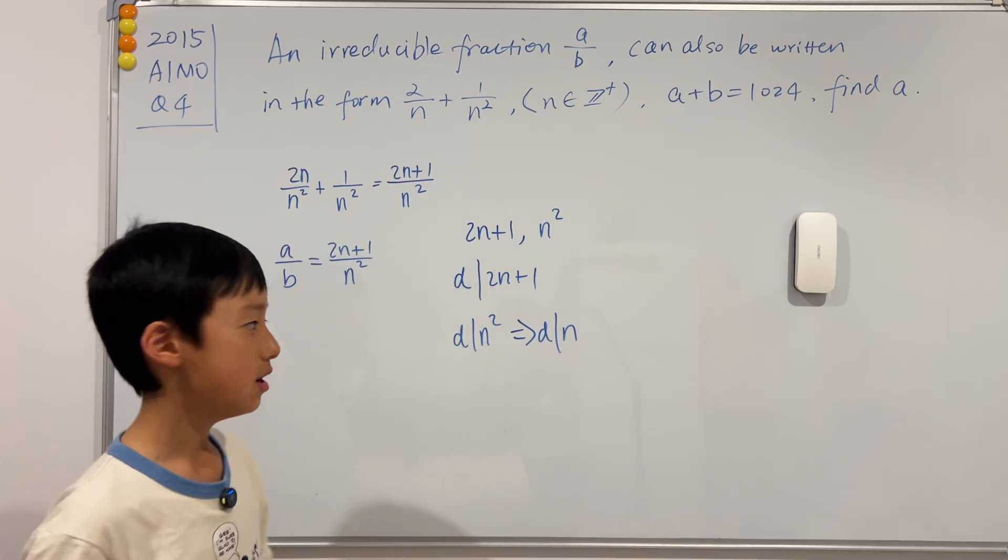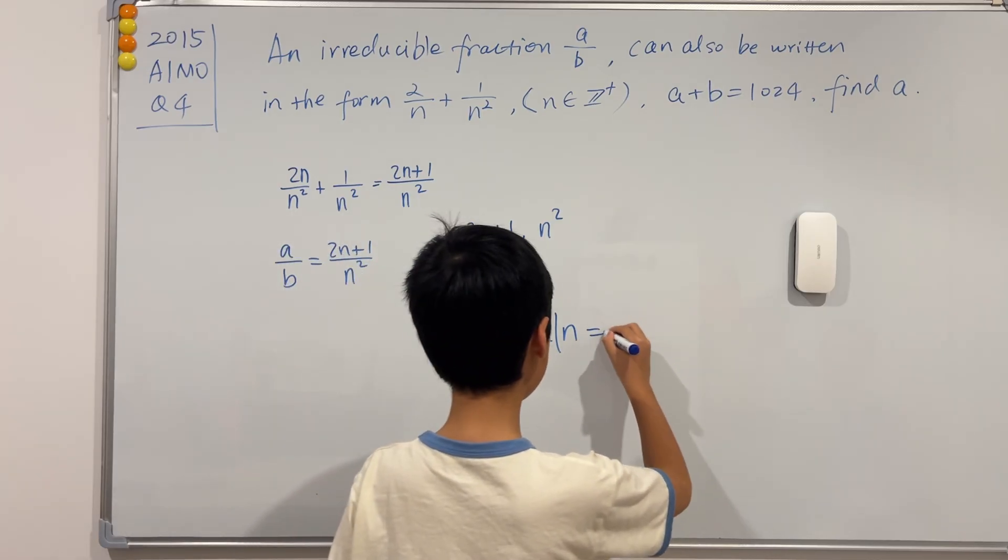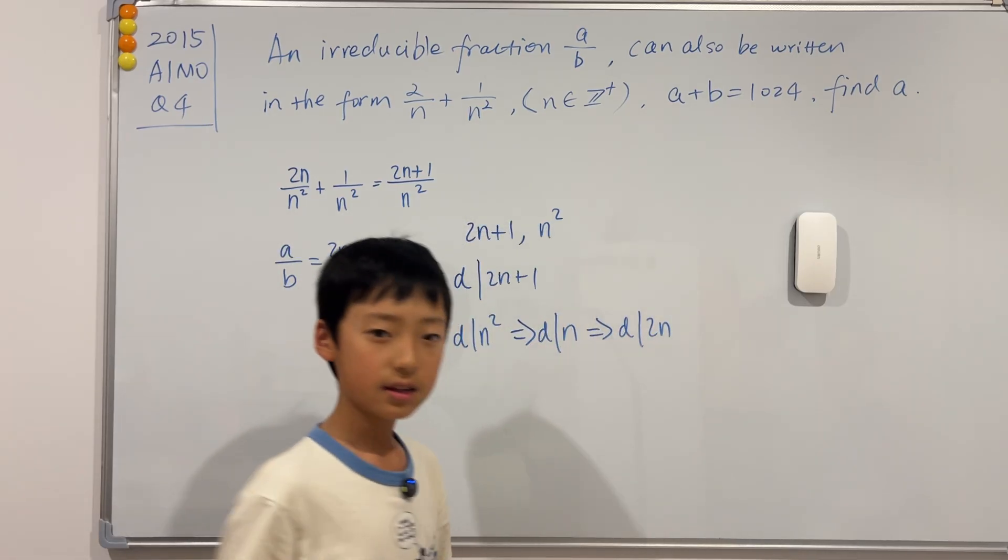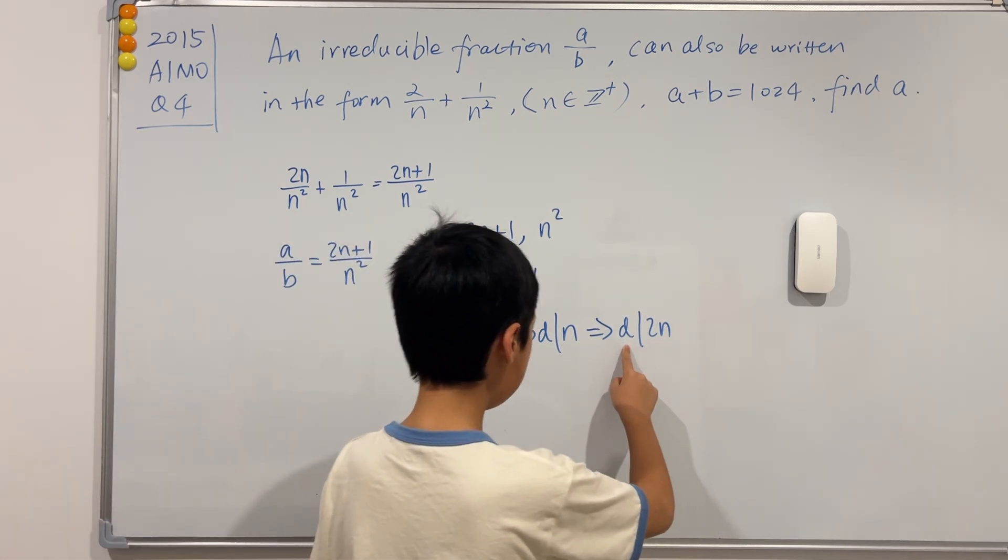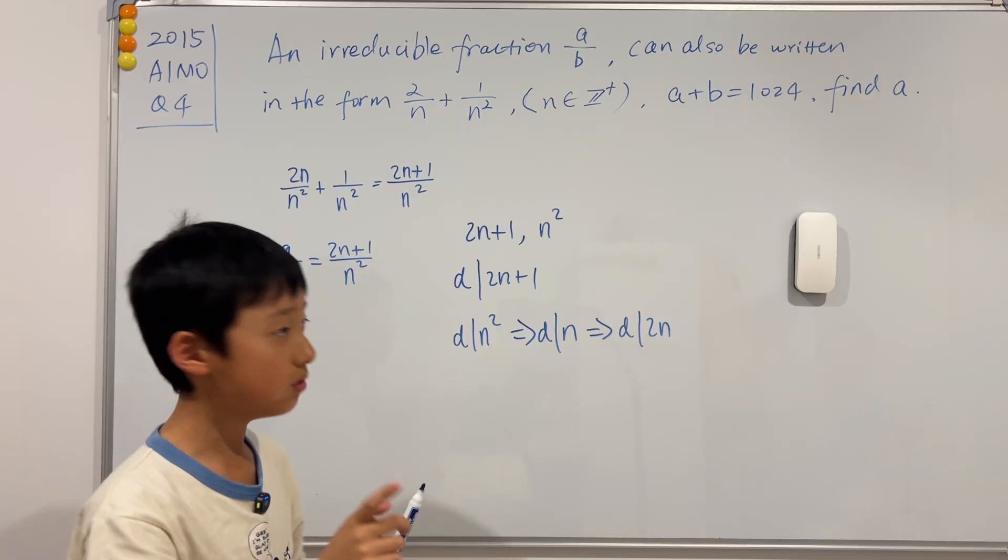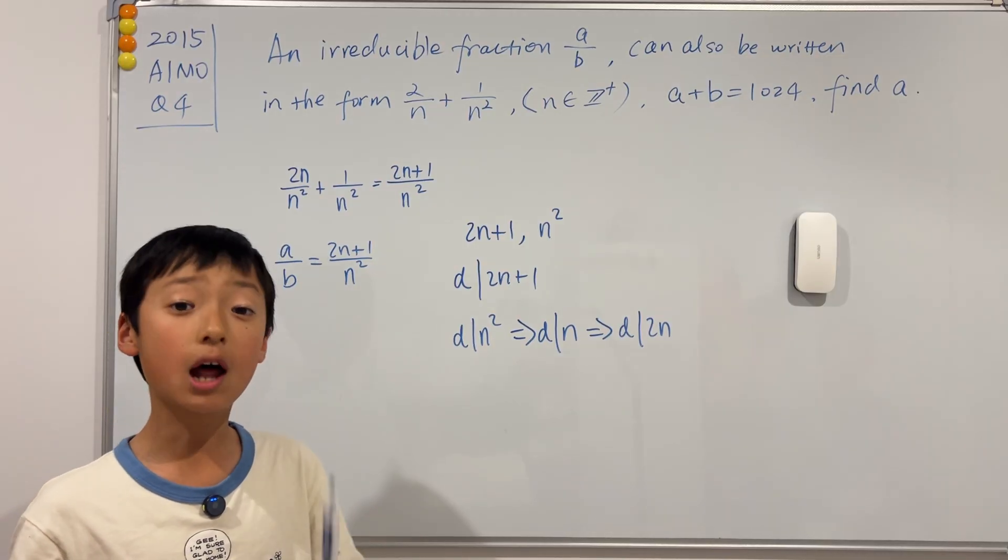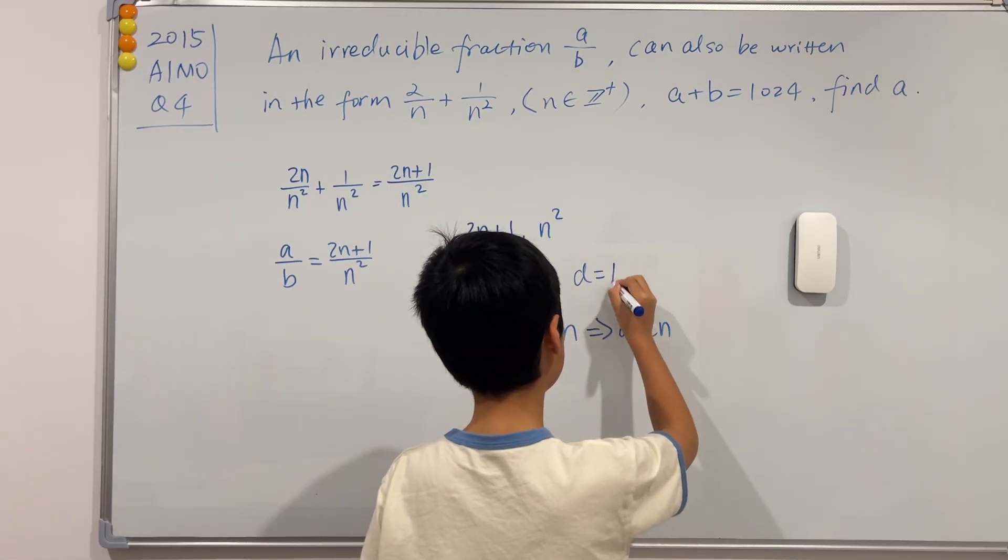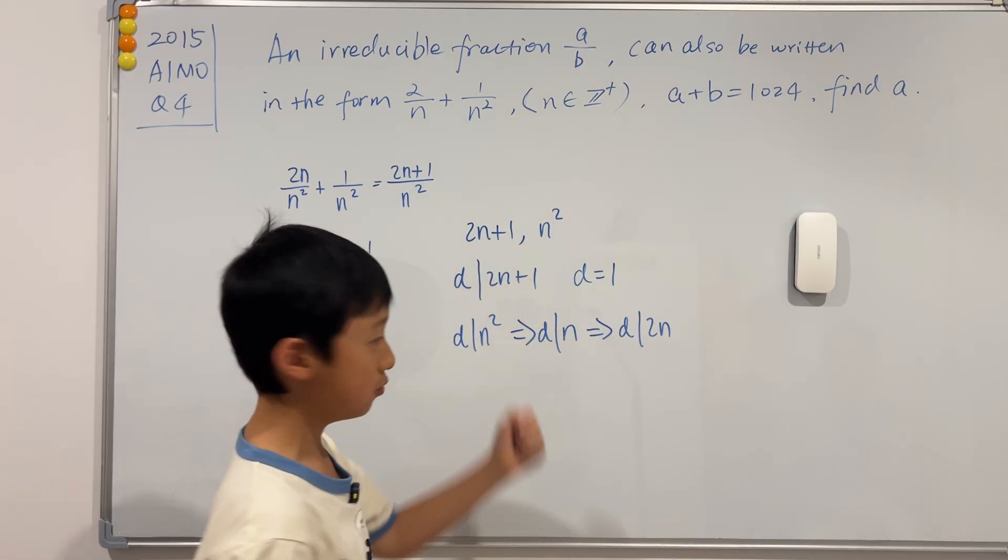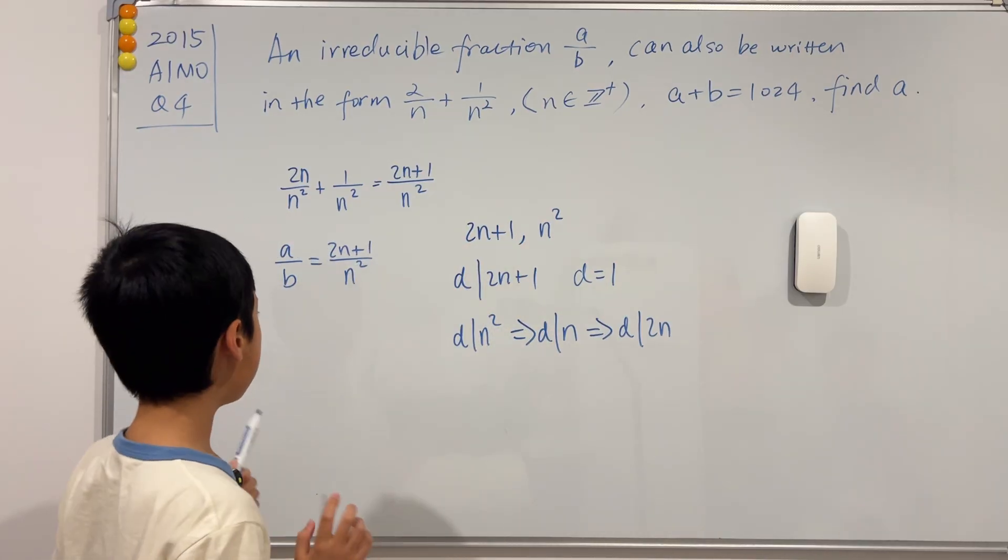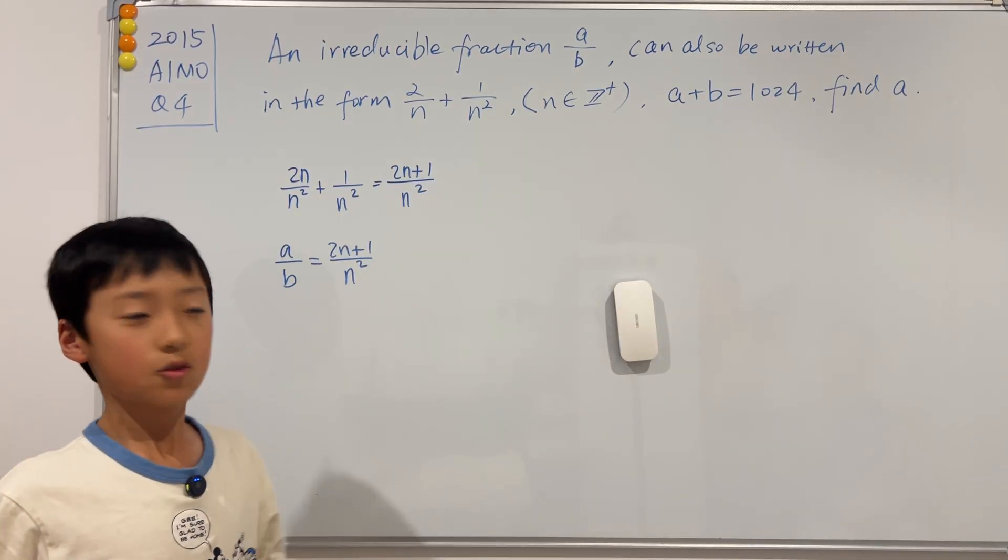Of course, using simple logic, if D can divide N, then D can divide 2N. Now, it is impossible for D to divide 2N and 2N plus 1 at the same time, unless D is 1. And if D is 1, then that means that these two are co-prime. So we have proved that these two numbers are actually co-prime.